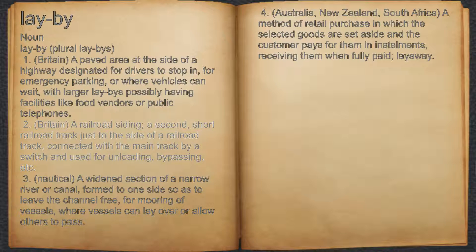2. A railroad siding — a second, short railroad track just to the side of a railroad track, connected with the main track by a switch and used for unloading, bypassing, etc.